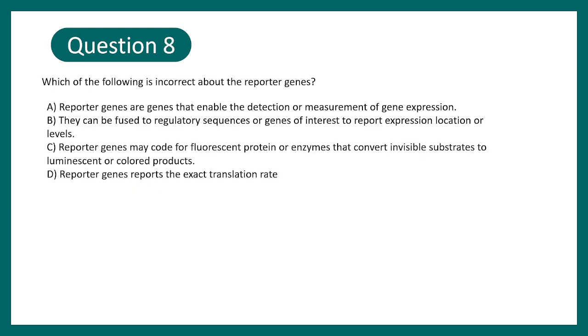Which of the following is incorrect about reporter gene? Reporter genes are genes that enable the detection of or measurement of gene expression. They can be fused to regulatory sequences or genes, gene of interest to report the expression or location. Then, reporter genes may code for fluorescent protein or enzymes that convert invisible substrate to illuminescent or colored products. Reported genes report exact rate of translation. Here, the correct option is option D because basically, a reporter can report about transcription and not translation. So, this is a transcriptional reporter, not translational reporter. Option D is correct.